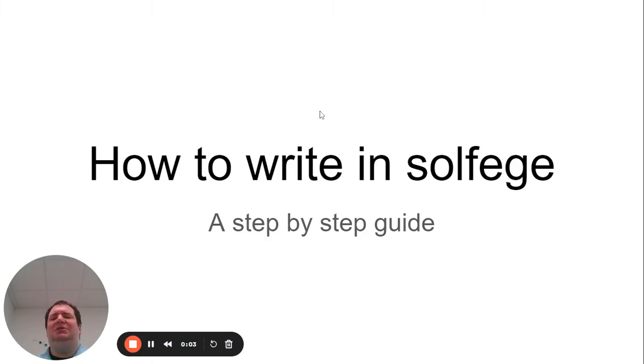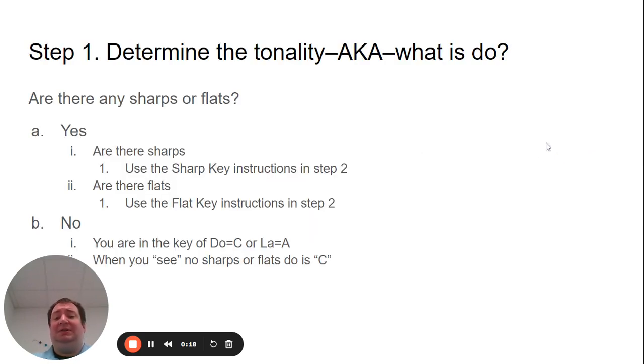Okay, so this is just a quick review on finding do, which is the first step in writing in your solfege. If you're ever writing solfege or need to find solfege in your sheet music, you first have to find or know what do is. To do that, you have to look at the key signature.